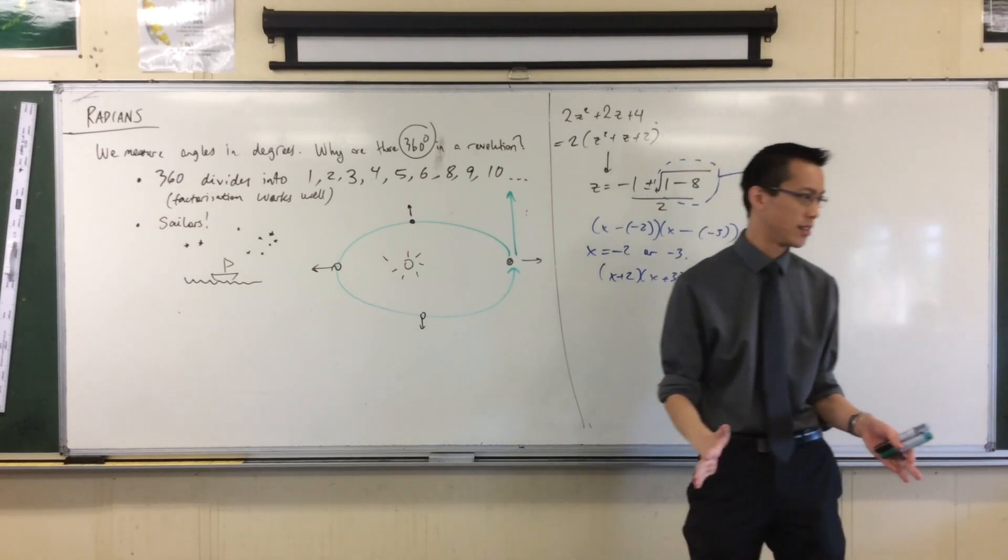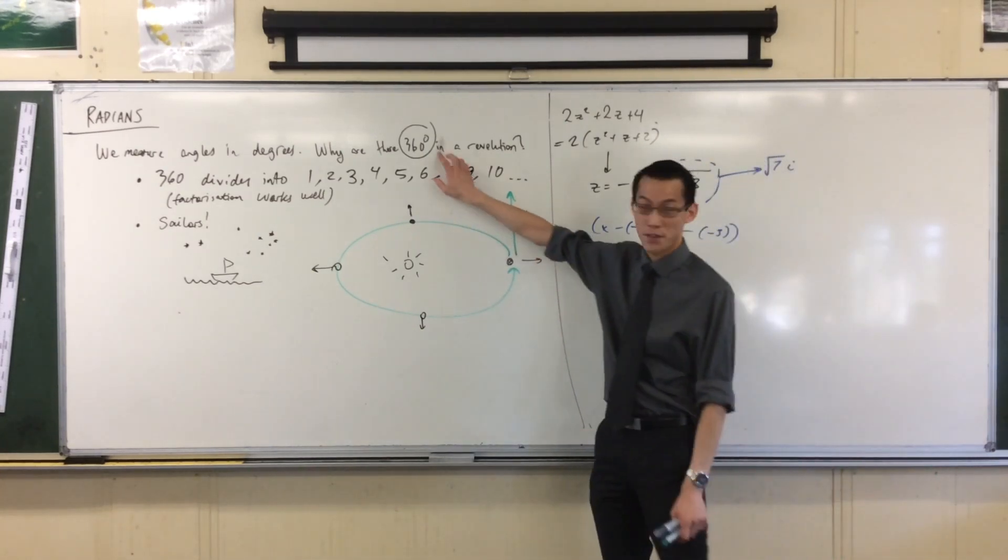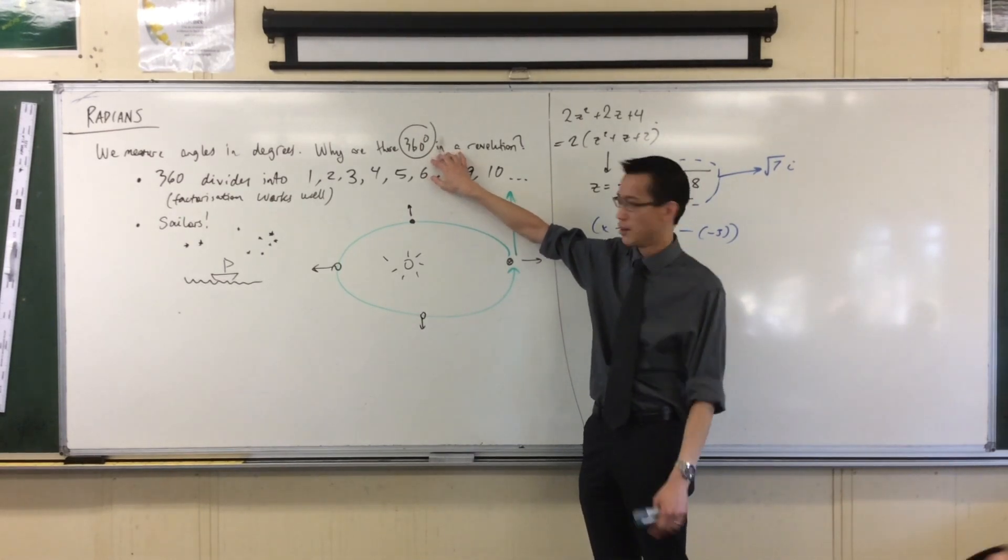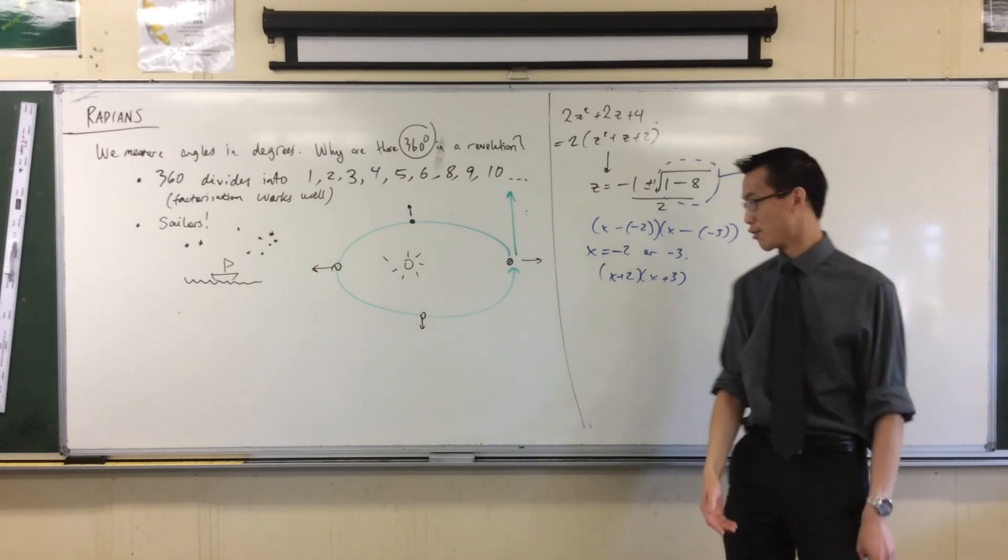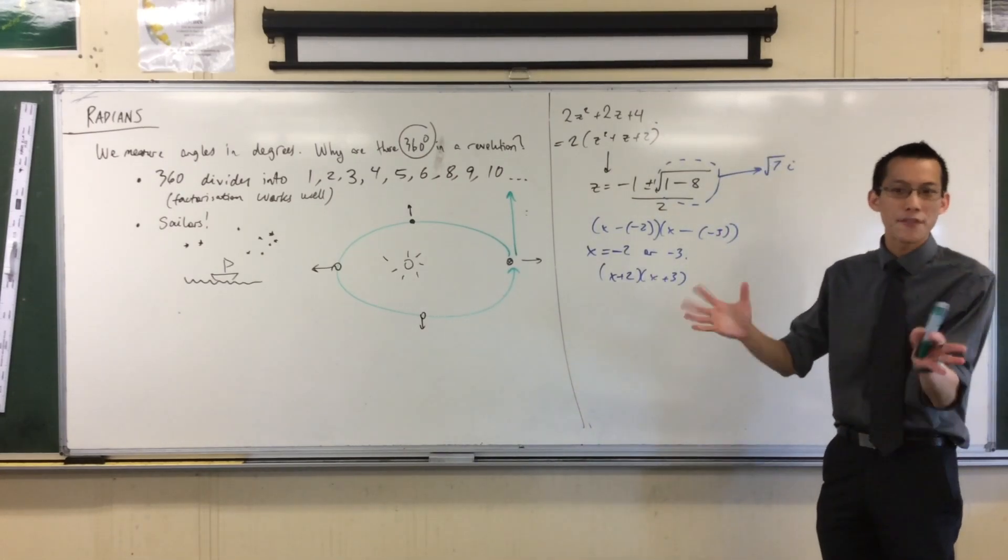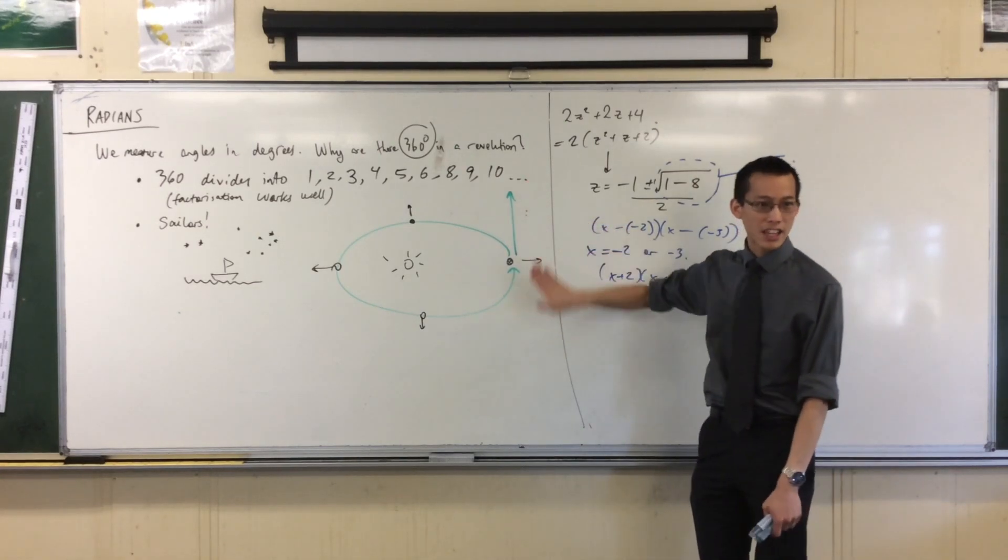If we were on different planets, we would all come up with a different measurement because the sailors would be like, well, it doesn't take 360 rotations. It takes like 85 or 100 and whatever number. So convenience and coincidence.